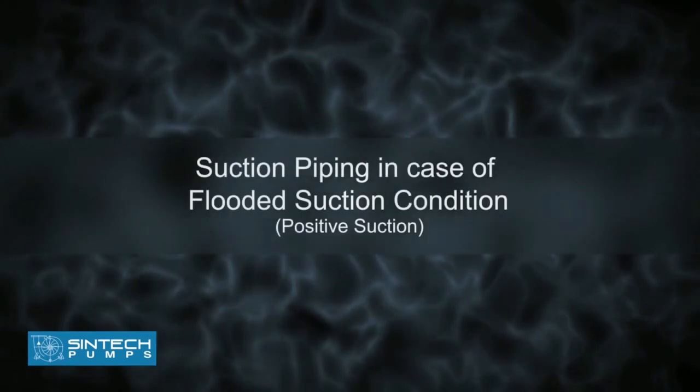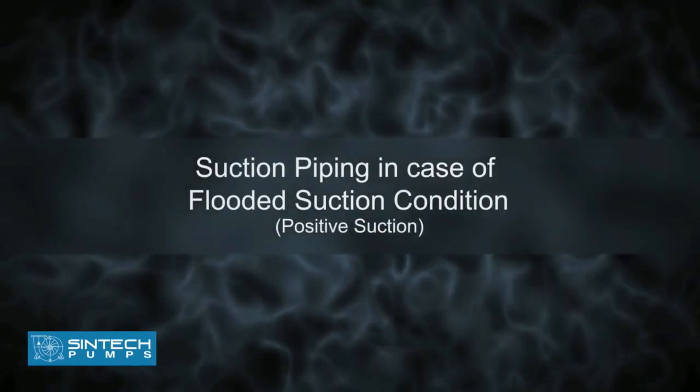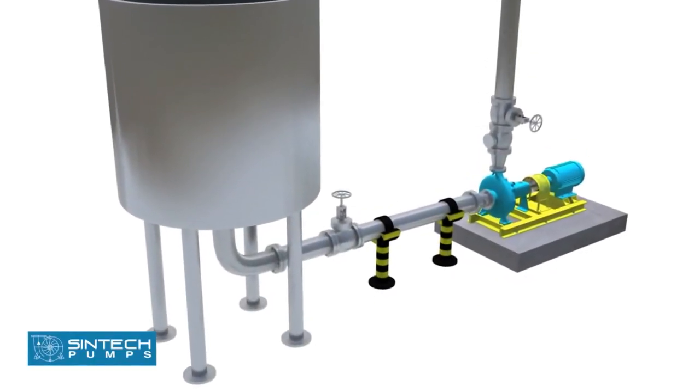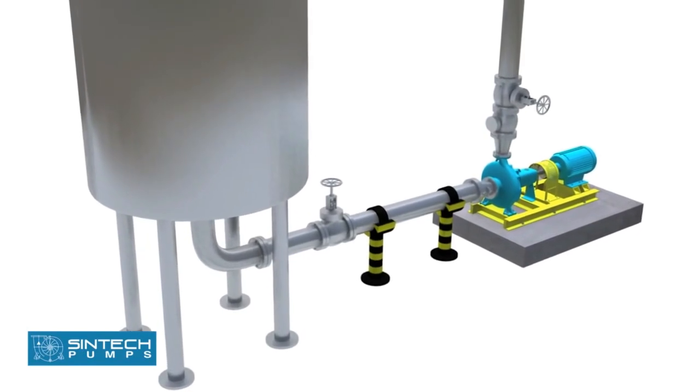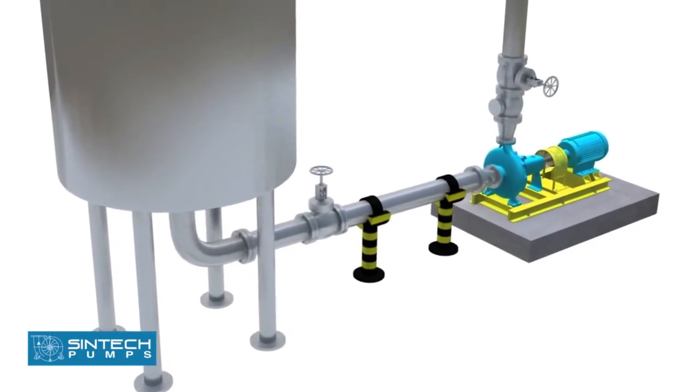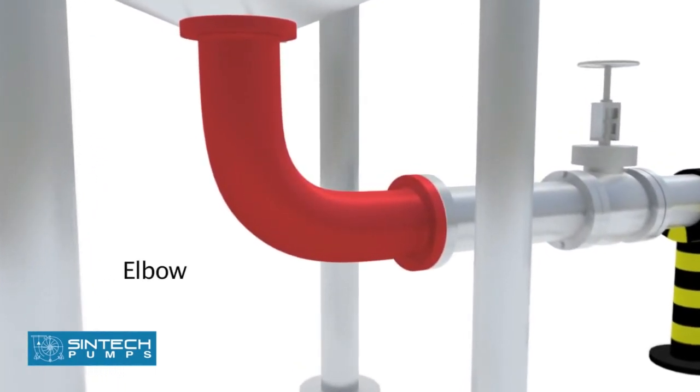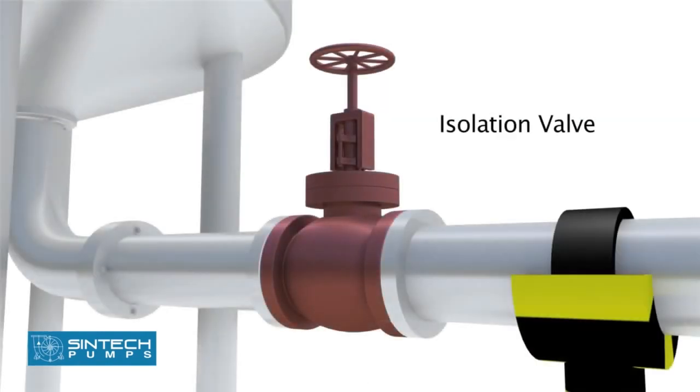Suction piping in case of flooded suction condition (positive suction): In case the water is being supplied to the suction through gravity, for example an overhead tank, a slightly different setup is needed. The elbow should be of standard type or of the long radius type. Isolation valve should be provided in suction pipe.